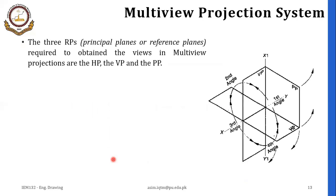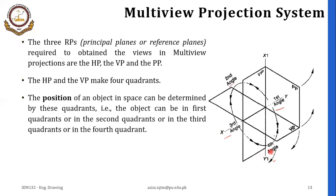In multi-view projection systems, we have three reference planes or principal planes that are required to obtain views: the HP (horizontal plane), the VP (vertical plane), and the PP (profile plane). The HP and VP make four quadrants — the first quadrant, second quadrant, third quadrant, and the fourth one. The position of an object in space can be determined by these quadrants — the object can be in the first, second, third, or fourth quadrant.